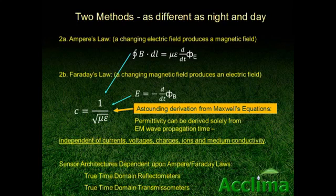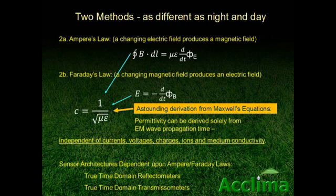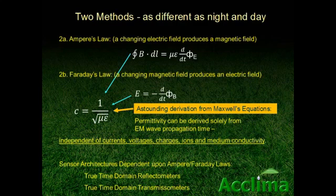The second principle wherein permittivity is manifest is in electromagnetic wave propagation. EM propagation is based in Ampere's law and Faraday's law. By combining these two laws we can derive an astoundingly simple relationship: EM wave propagation is a function only of permittivity and magnetic permeability. Permeability is a constant in soils. Permittivity can then be derived by measuring the propagation time of an electromagnetic wave through the soil. This measurement is not dependent upon field geometry and is not a measurement of any current, voltage, charge, or field — it is only a time measurement.